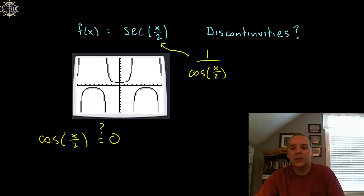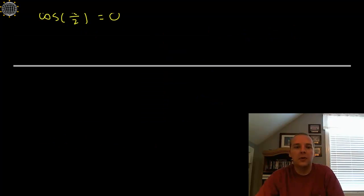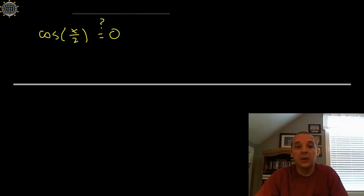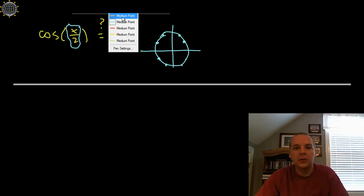So let's think for a minute—and for this we have to know our unit circle, so it's very important to know our unit circle well. Where along the unit circle is cosine equal to zero? We're going to ignore this little part on the inside for a minute. Just think about all these points along the unit circle—where is the cosine zero along the unit circle?